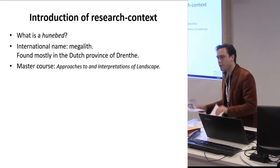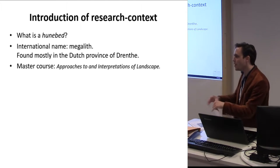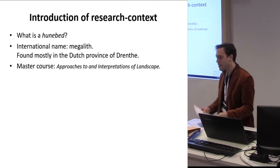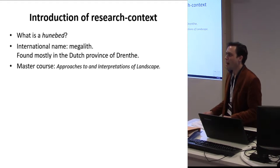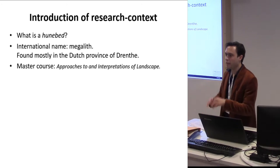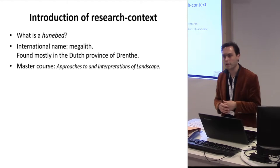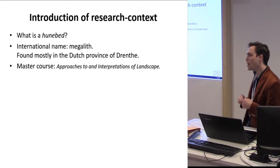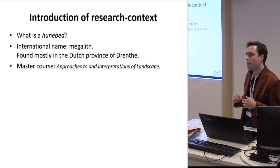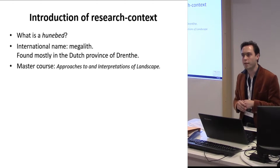First of all, what is a unibet? I don't think any one of you knows what it is, because it's a really Dutch phenomenon. The international name or category is the Megalith — so it's about big rocks and stones from the archaeological archive. They are mostly found in the northern provinces of the Netherlands.